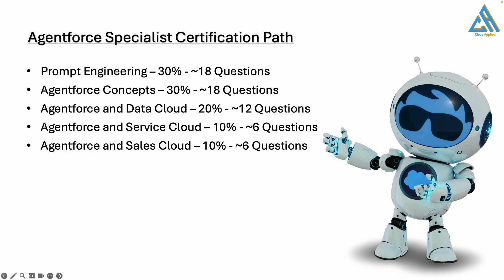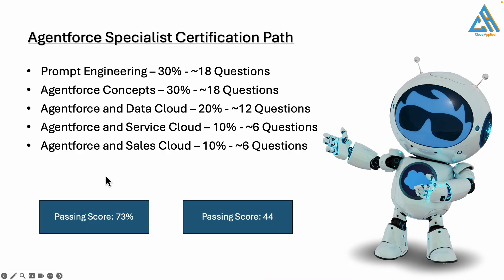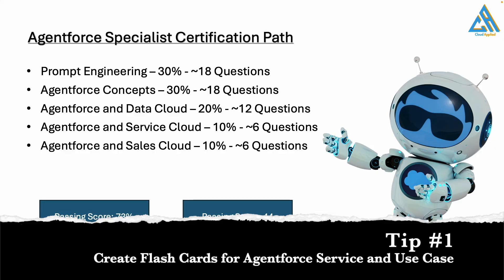One of the key things that will help your preparation is making notes about what each service does in each of these sections. When you are very clear about the service and the application, you've almost cracked the certification. The passing score is 73% — you need to get around 44 questions right out of 60. You will have three options for each question, so probabilistically one out of three options is correct, giving you a 33.3% baseline. There's a fair chance you'll get confused, so it's better to create flashcards listing a service and what it does and where it is used.